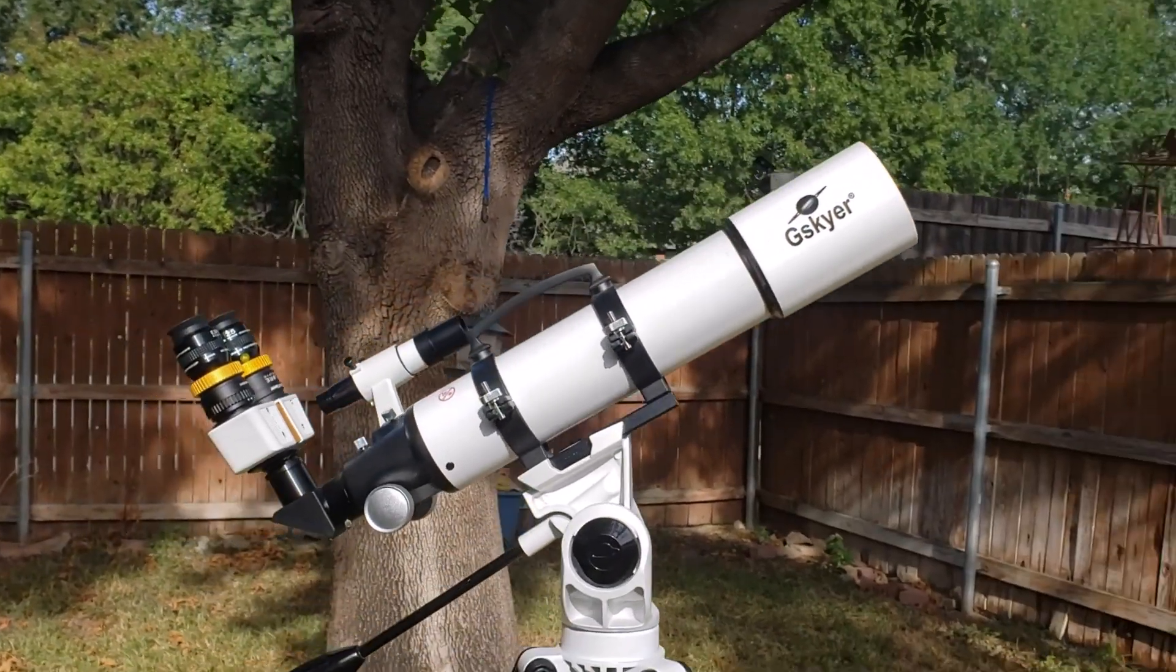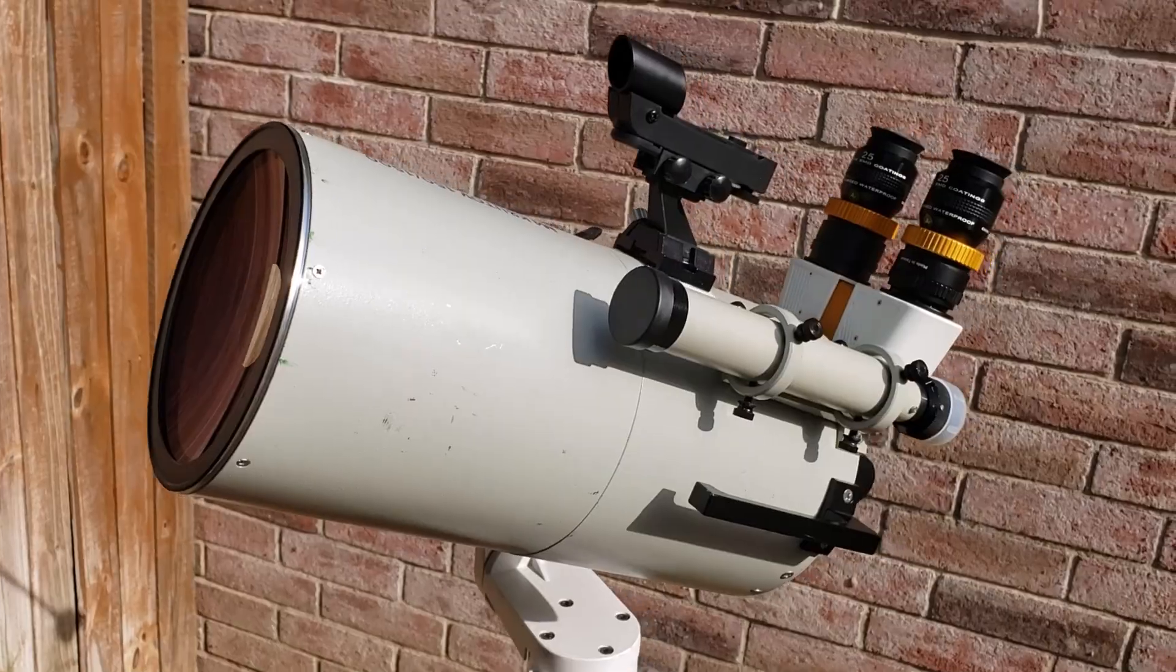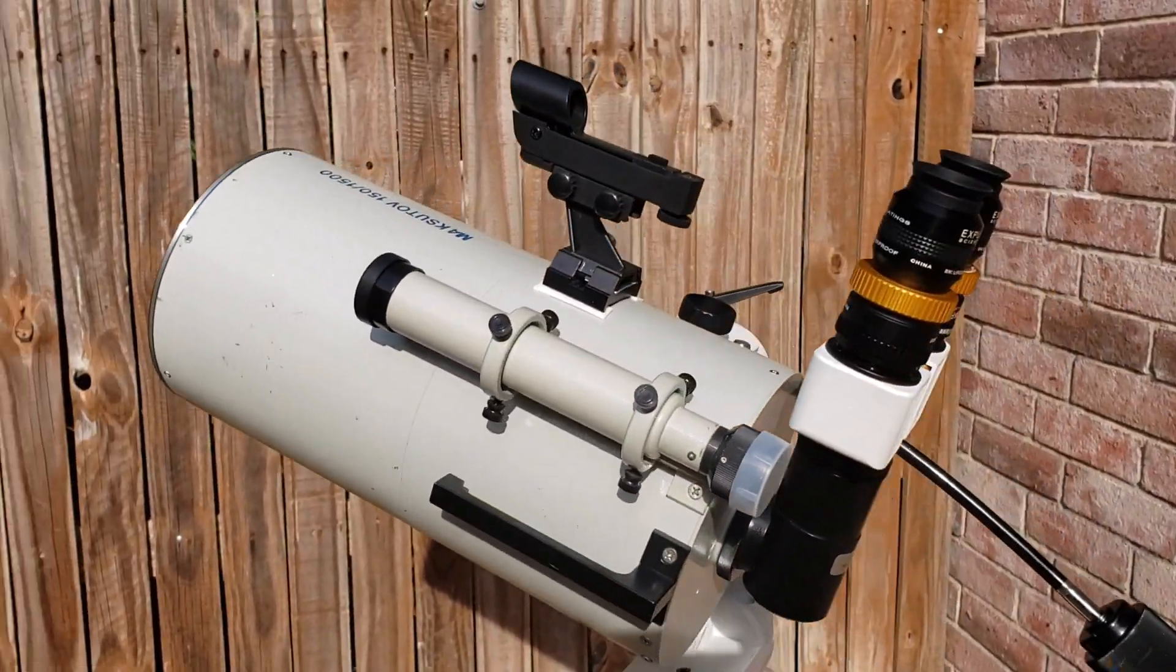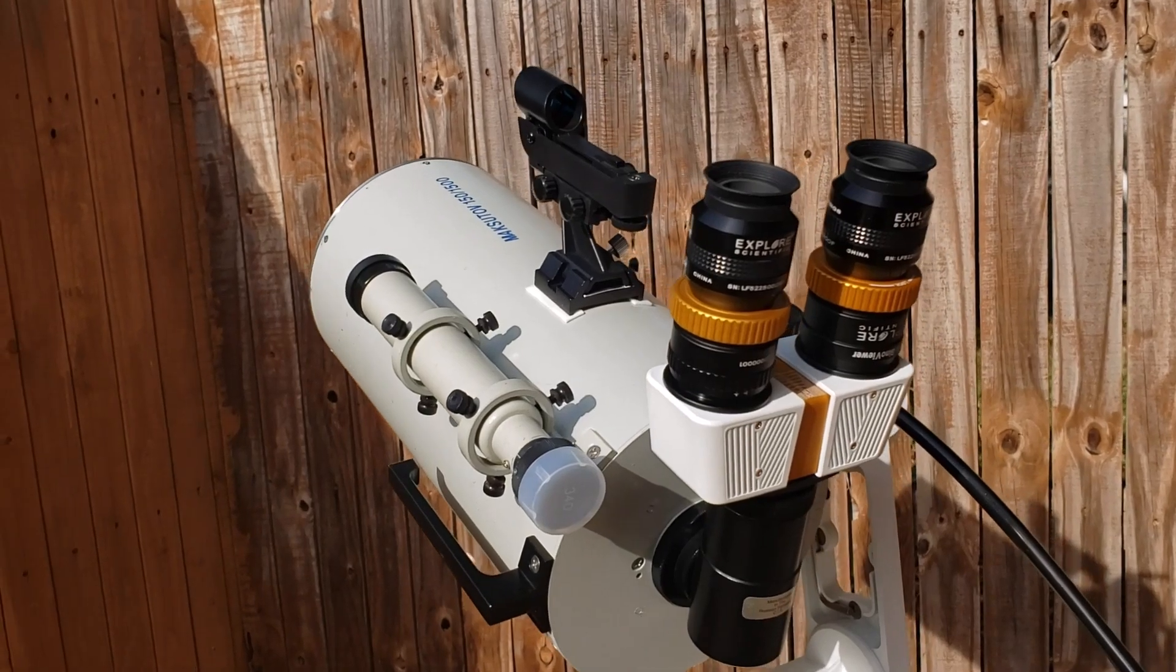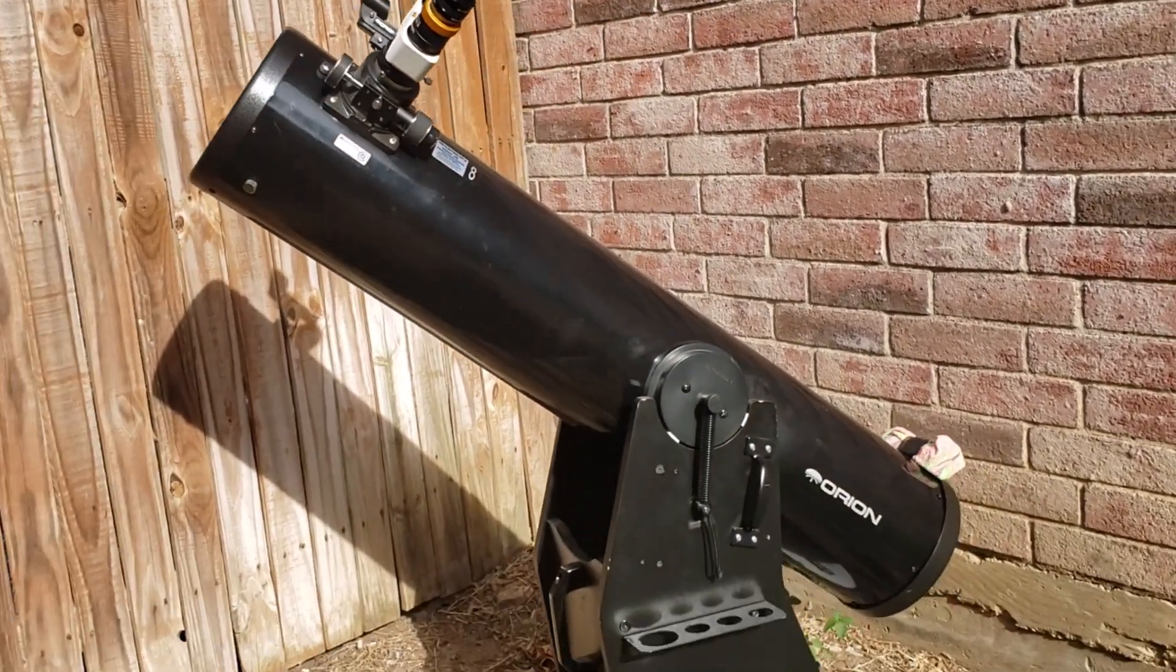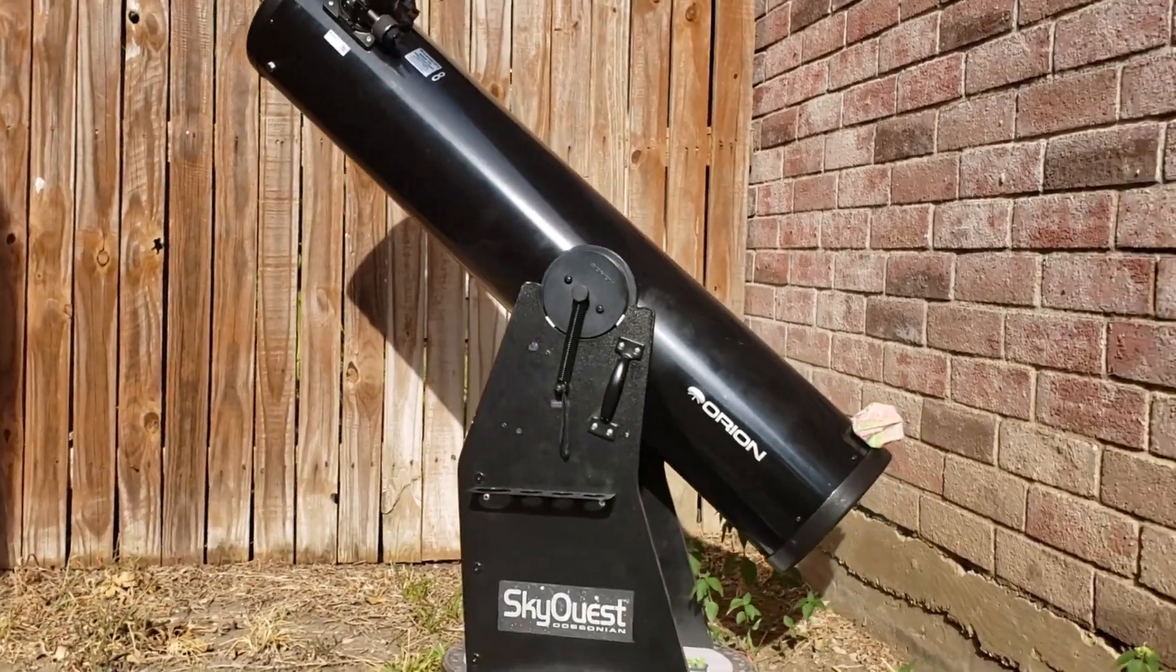Number one, the G-Skyer Refractor with a 600 millimeter focal length. Number two, an Intez Maxitov Cassegrain with a 1500 millimeter focal length. Number three, an Orion 8-inch Dobsonian Reflector with a 1200 millimeter focal length.